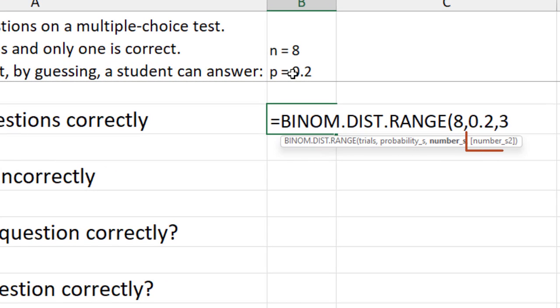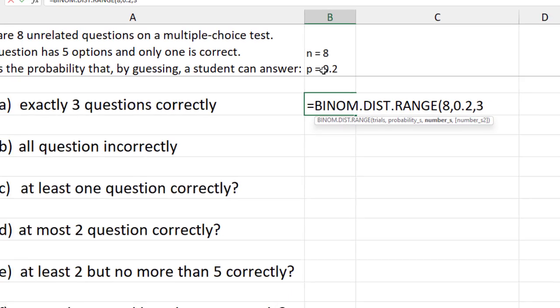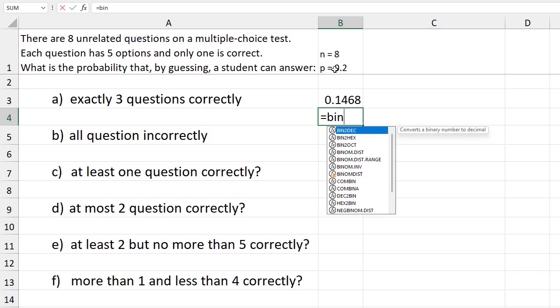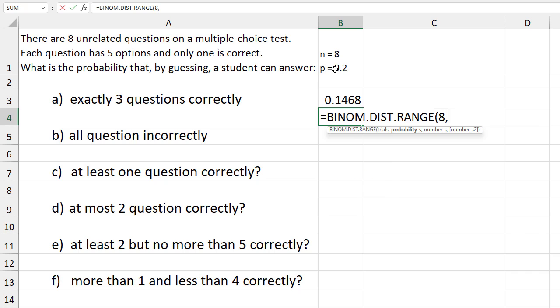You see here that the second success number is in brackets, telling us that it is optional. So we can enter and obtain the result. Note that for exactly one point, you can also set both lower and upper limits to the same value.